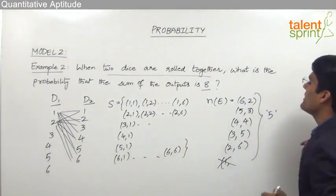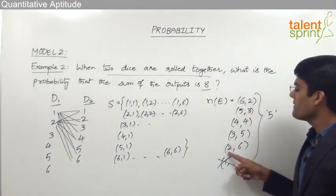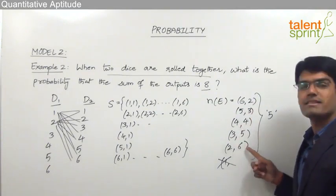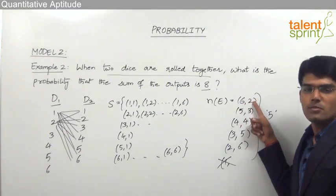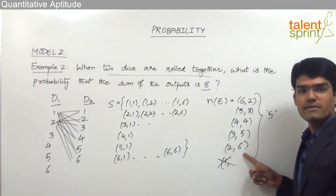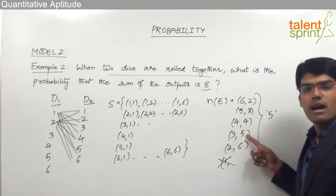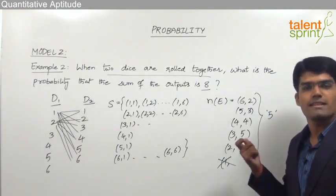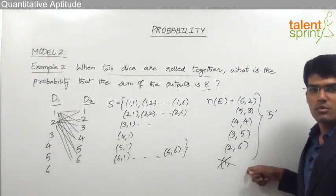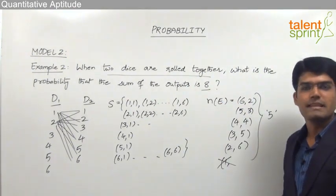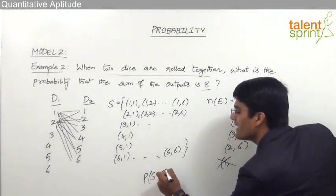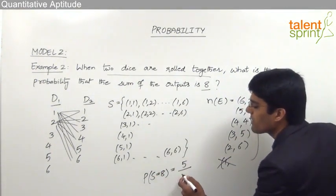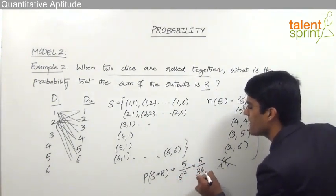There are 5 possible outcomes where the sum is 8: (6,2), (5,3), (4,4), (3,5), and (2,6). Note that (6,2) and (2,6) are two different outcomes since dice 1 and dice 2 are distinct. Similarly, (5,3) and (3,5) are two different outcomes. But (4,4) counts only once. So the probability that the sum equals 8 is 5/36.